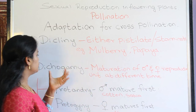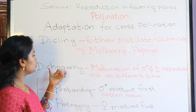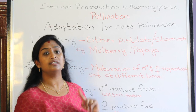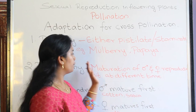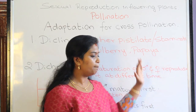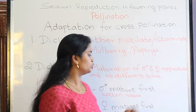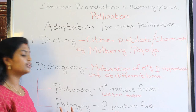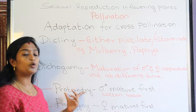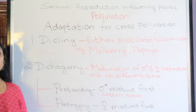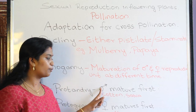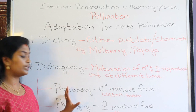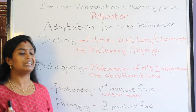The second type of adaptation is called dichogamy. In dichogamy, the maturation of the male and the female reproductive unit of the flower takes place at different times. Since it takes place at different times, cross-pollination is compulsory. There are two types of dichogamy. One is protandry, where the male reproductive unit of the flower matures first. The examples are cotton and salvia; the female unit matures at a later stage.